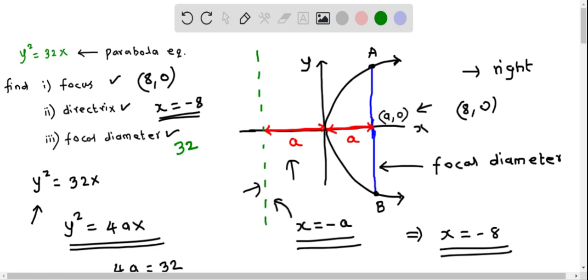So we have found all the characteristics of this parabola: focus is (8, 0), directrix is x = -8, and focal diameter is 32.